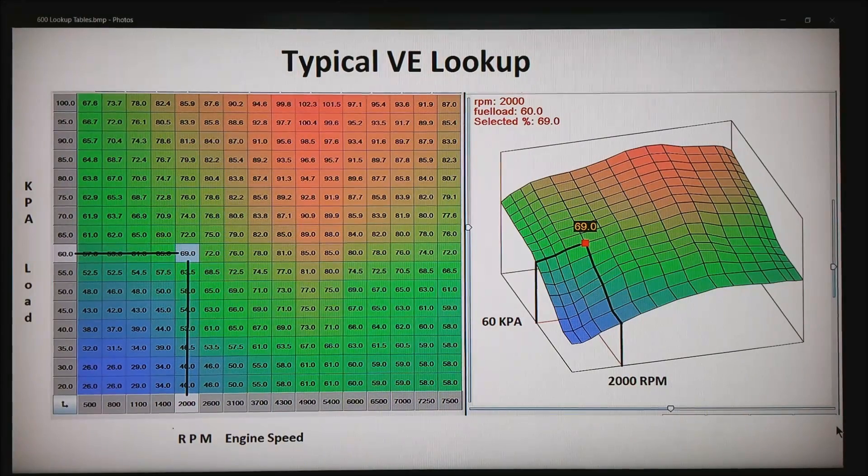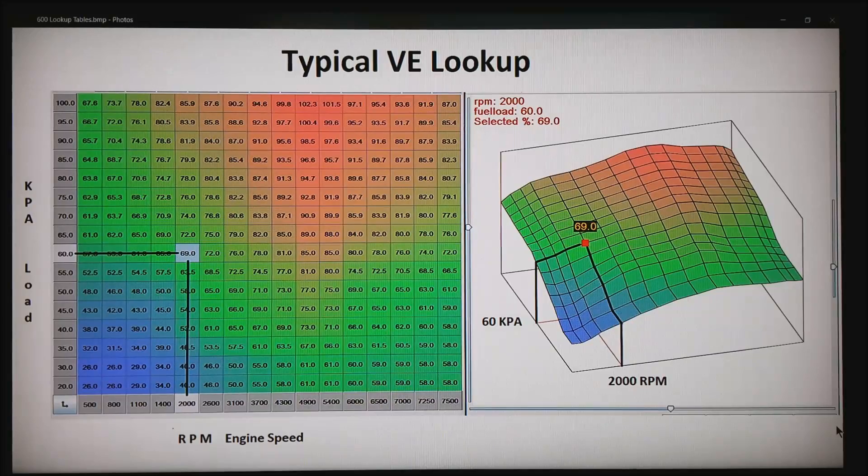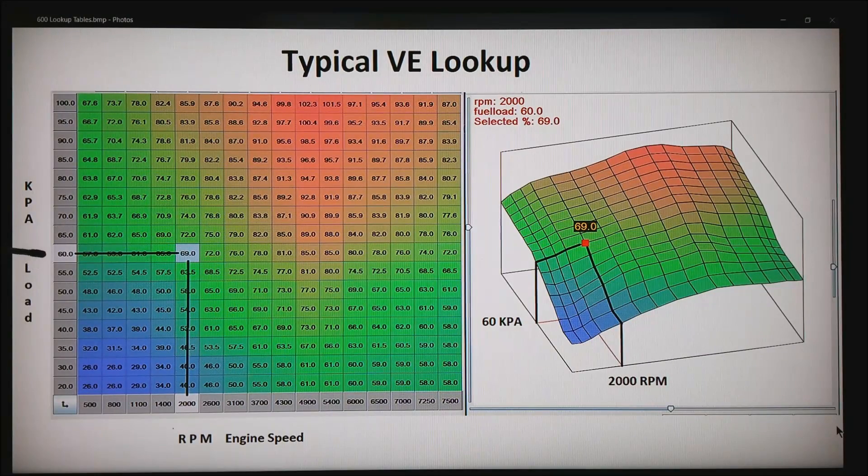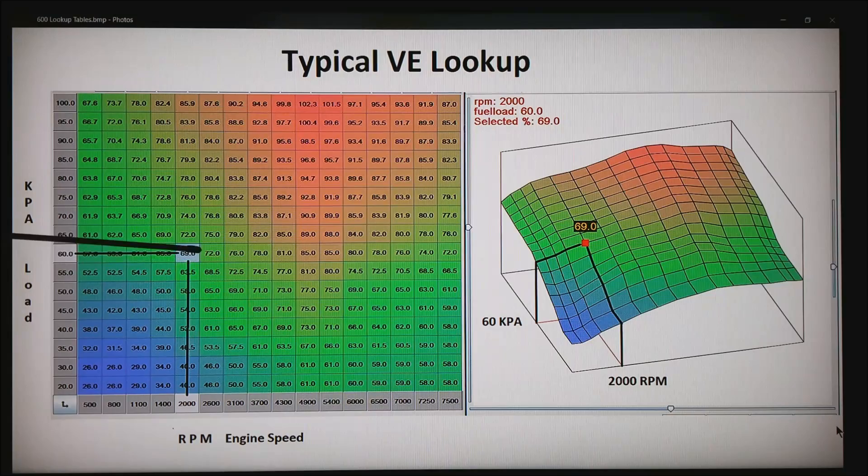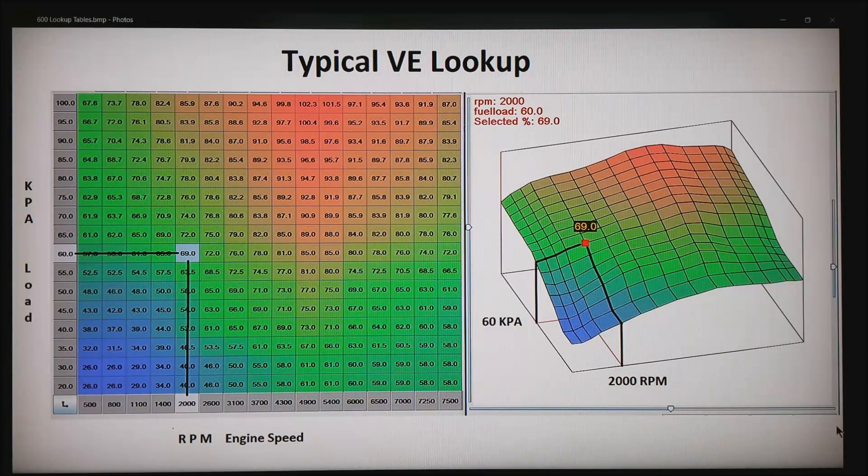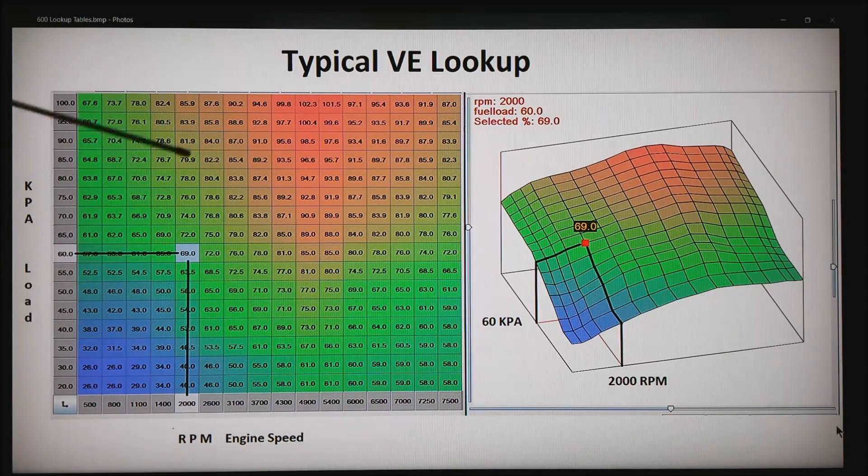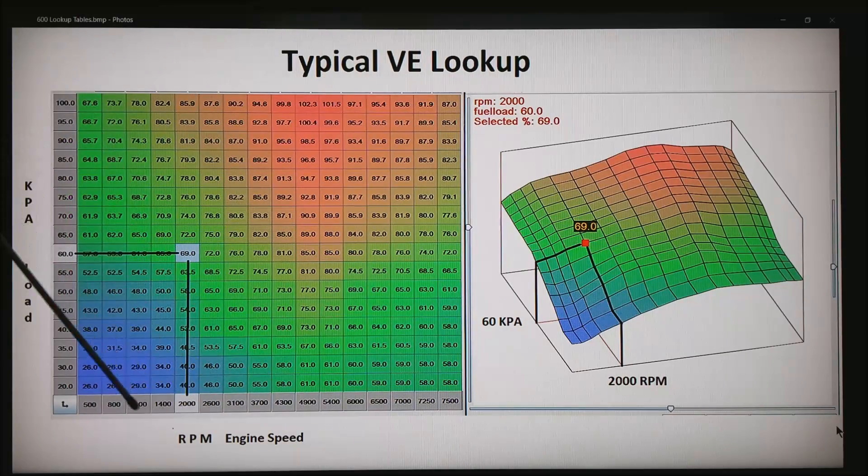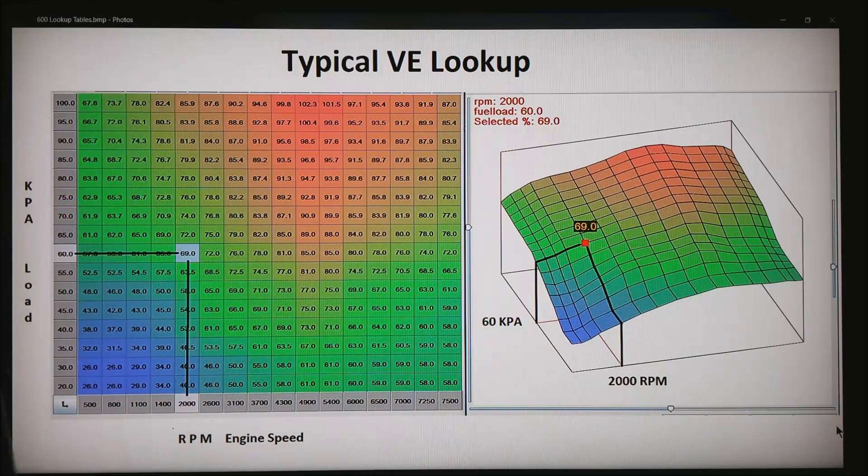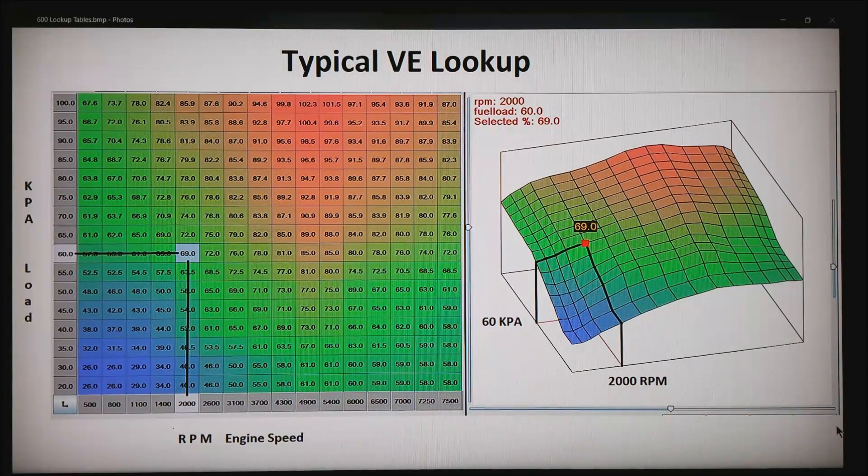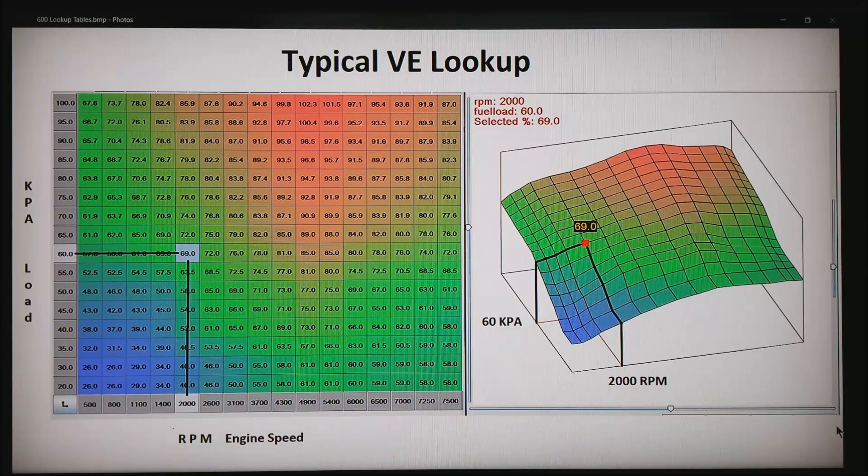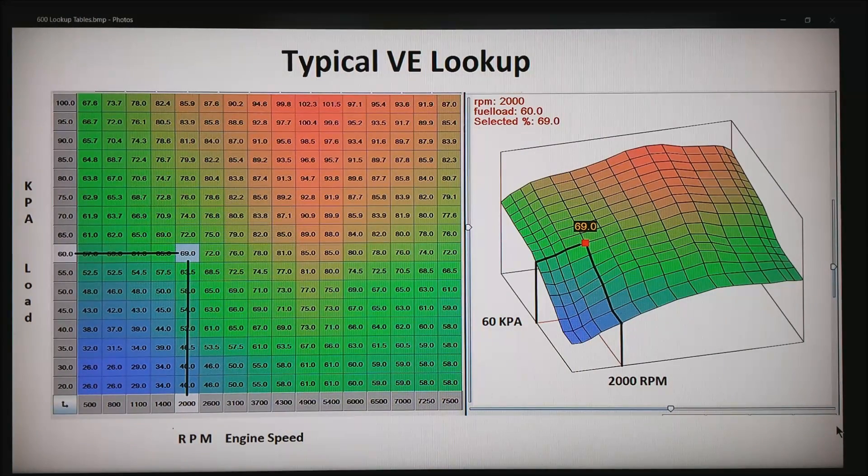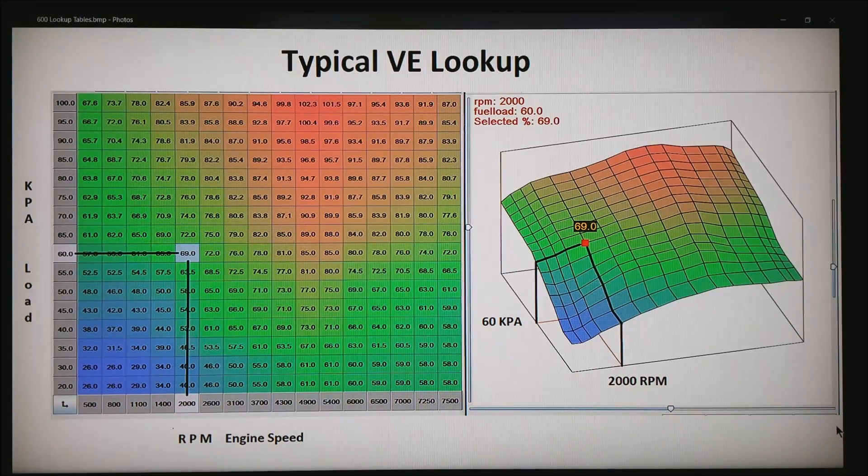This is our same VE table we talked about earlier. Here's the 60 kPa, the 2000 rpm, and we get the 69 that we developed from testing. What we're doing with tuning is developing this curve that we most reliably hit our target AFR as verified by the O2 sensor in the exhaust system.